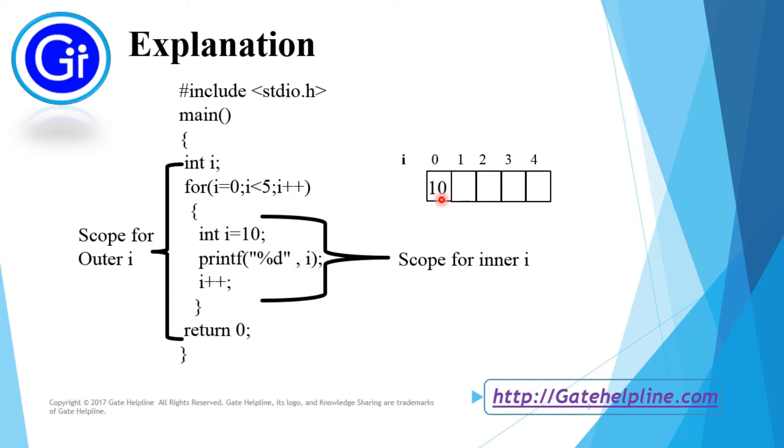Now we have at this place 10 and after that the value this i is incremented. So this 10 will become 11 and then we reach here.